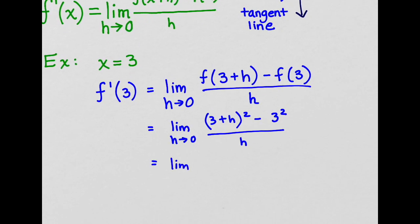Step 3 is to simplify. We can expand 3 plus h quantity squared to get the limit as h approaches 0 of 9 plus 6h plus h squared minus 9 over h.